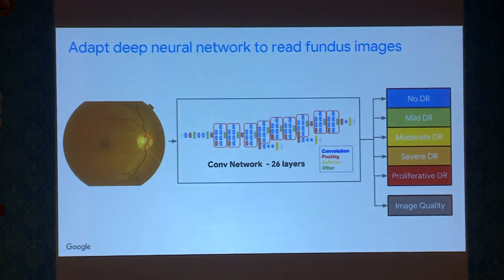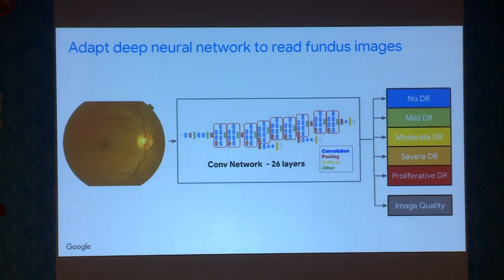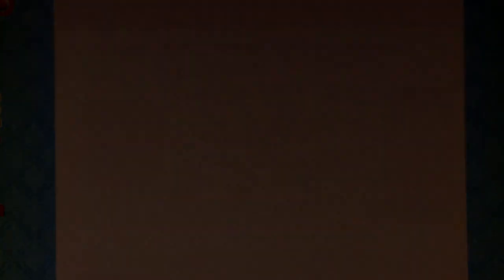The structure of this network is the same as the one we use to classify consumer images like cats, dogs, bikes, and cars — it's called the Inception model. This model outputs the class of diabetic retinopathy and also the image quality, whether images are gradable or not. Using this system, our model gets close to or on par with specialists after several rounds of tuning.